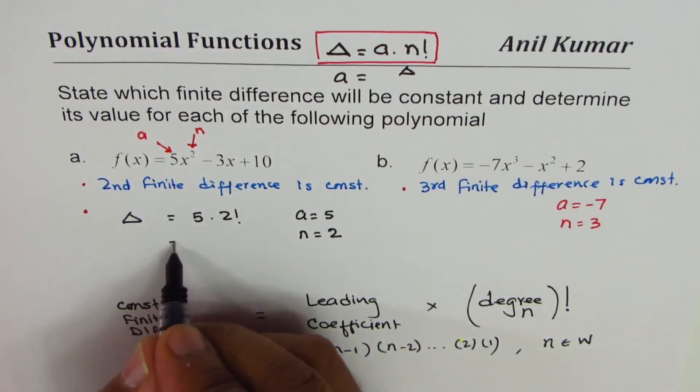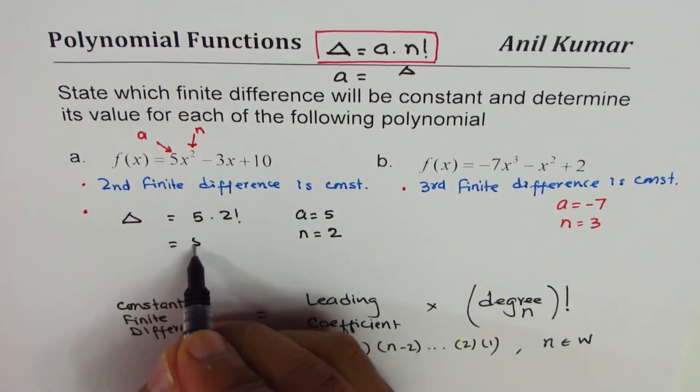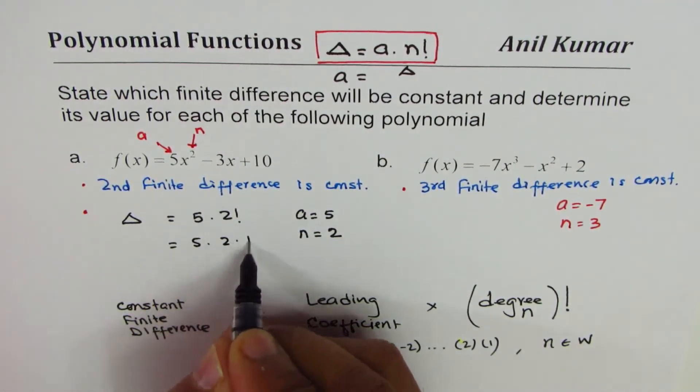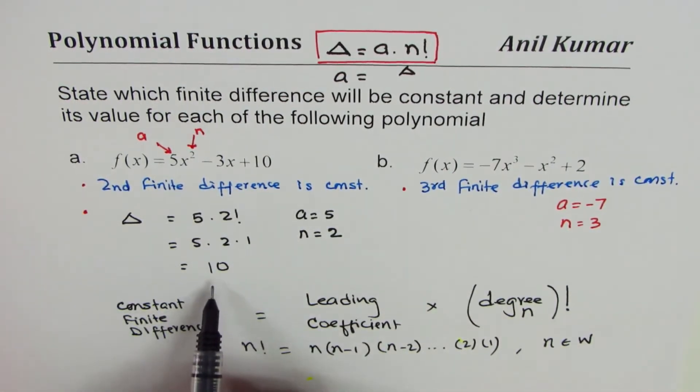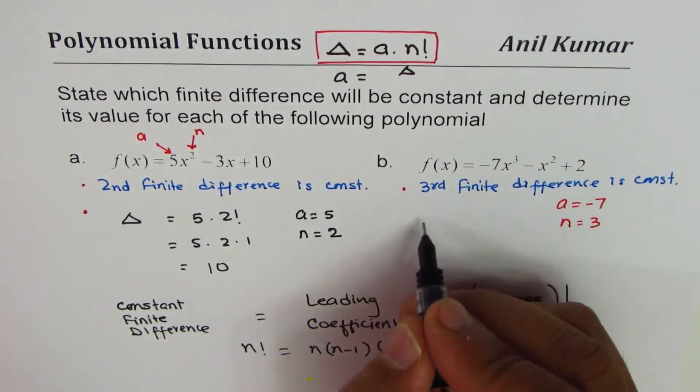So what we have here is leading coefficient 5 times 2 factorial means 2 times 1, and that gives us 10. So the finite difference should be 10 for a. For b, finite difference should be how much?